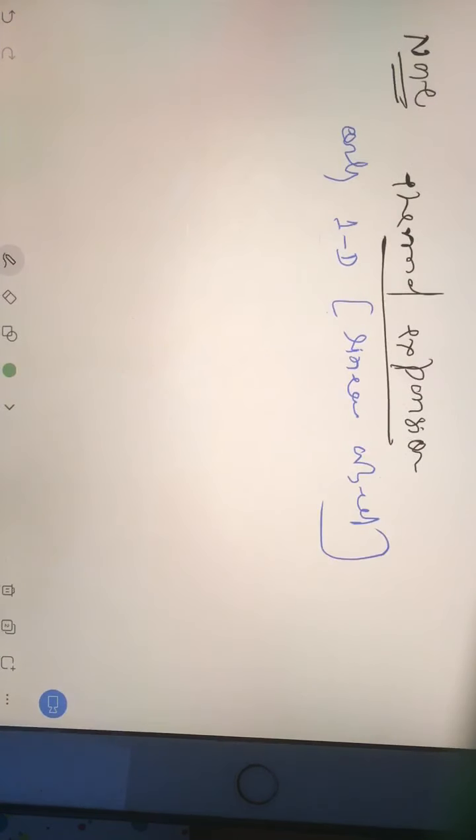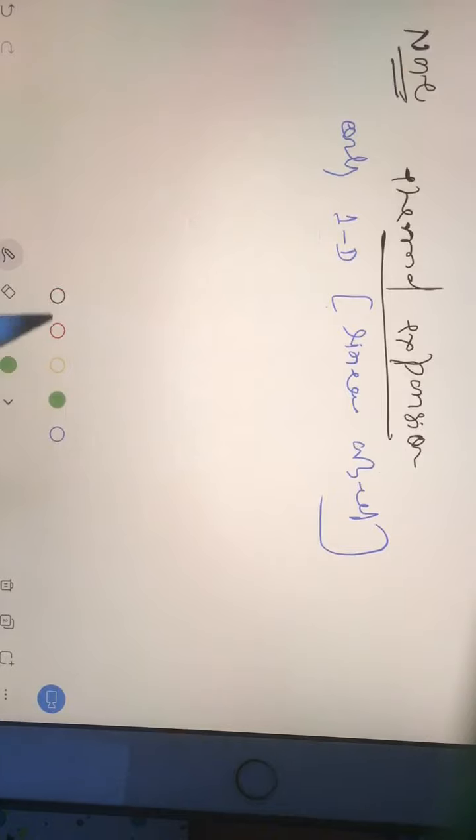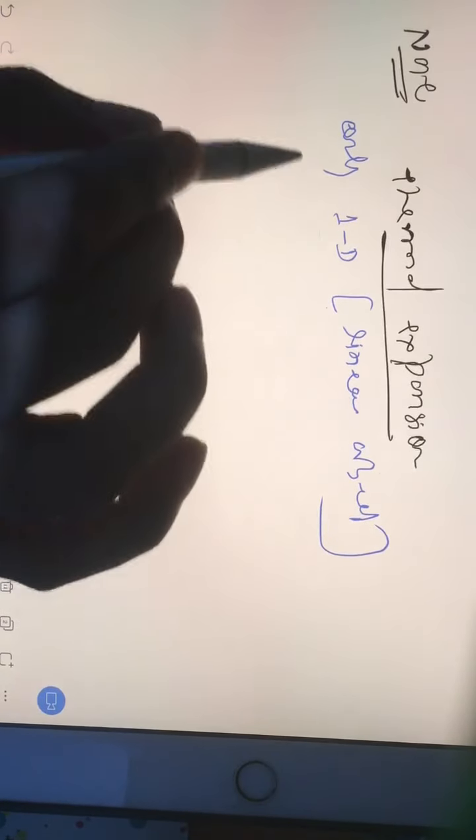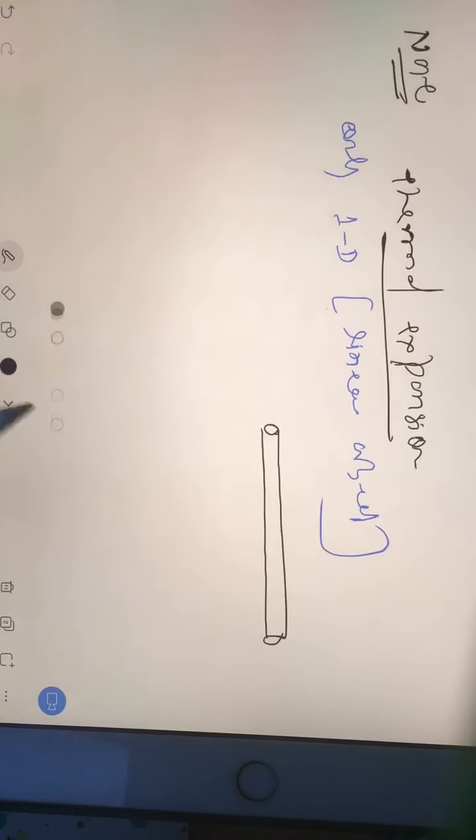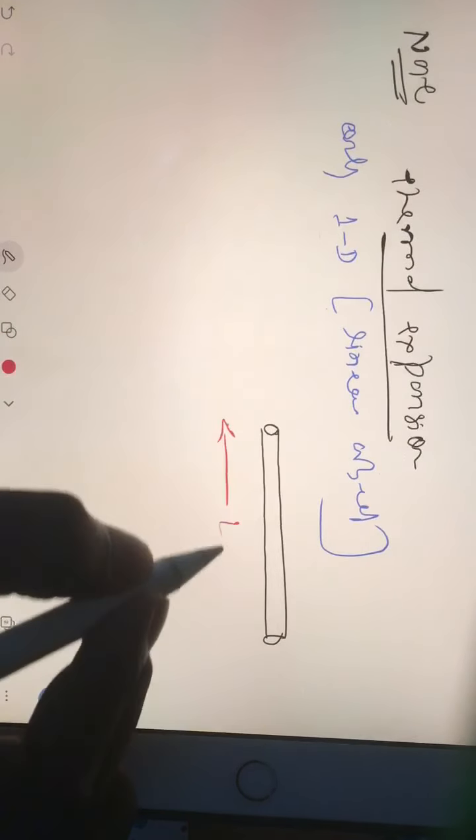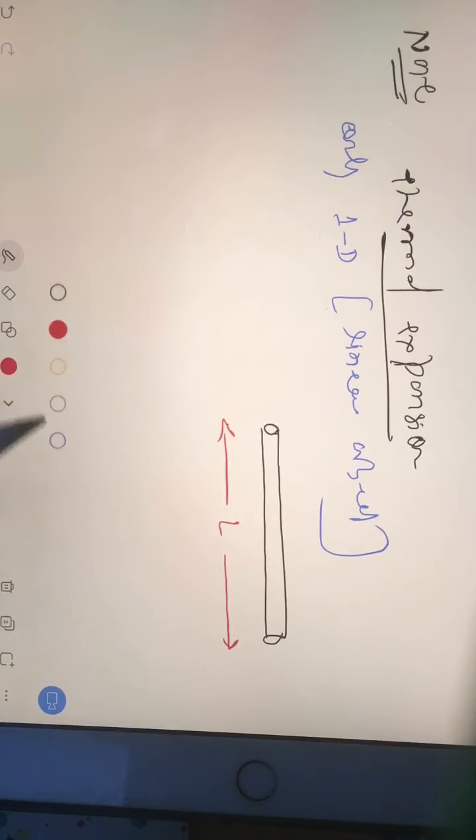1D, we will build up 2D and 3D. So first understand what is thermal expansion and what is a 1D object. Consider a wire and give the initial length of the wire as L, and just consider you are heating the object somehow.